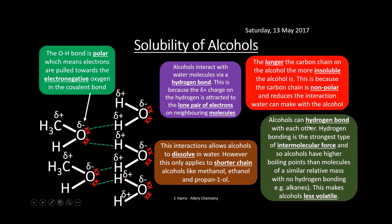Alcohols can also hydrogen bond with each other, and hydrogen bonding is the strongest type of intermolecular force. Alcohols therefore have a higher boiling point than molecules of similar relative mass with no hydrogen bonding — for example alkanes. An alcohol will have a higher boiling point than a comparable alkane because of hydrogen bonding, whereas alkanes only have temporary induced dipole–dipole interactions. This makes alcohols less volatile than alkanes.